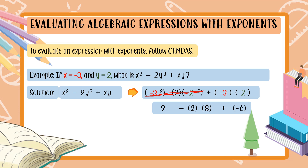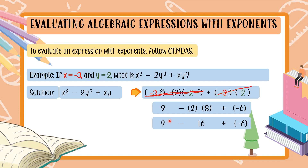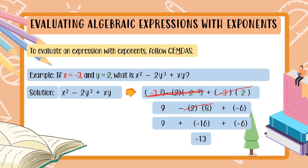We still have more to multiply. We are not yet done with M. Bring down 9, bring down minus, and 2 times 8 is equal to 16, then plus negative 6. Now we have subtraction, so we apply co-cha-cha: 9, change minus to plus, change positive 16 to negative 16, and bring down plus negative 6. Add everything: 9 plus negative 16 plus negative 6 is equal to negative 13.